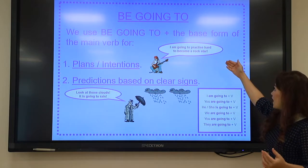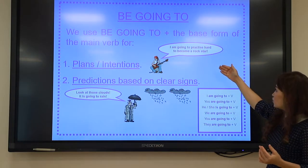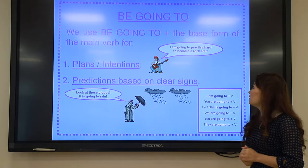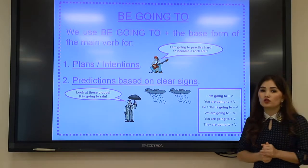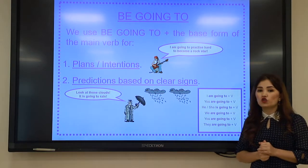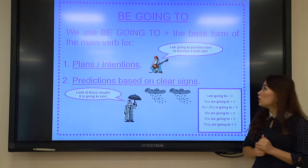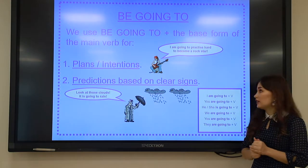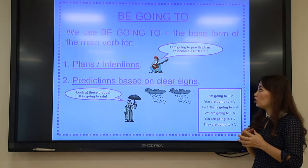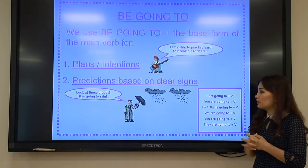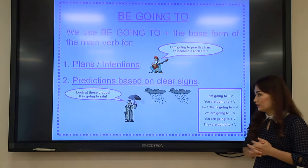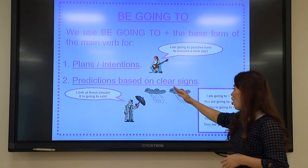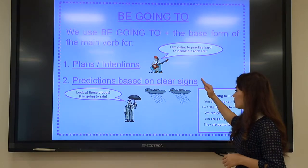For example: I am going to practice hard to become a rock star. This represents a pre-planned action or intention. The second usage is predictions based on clear signs.